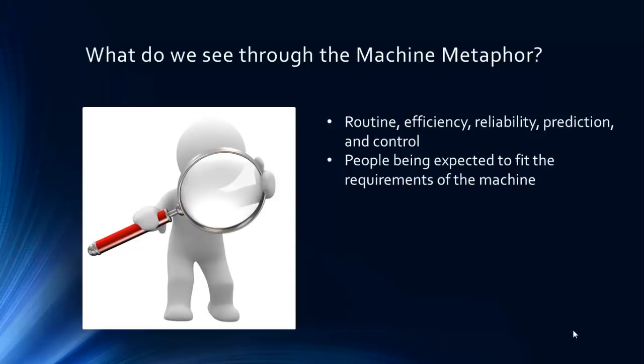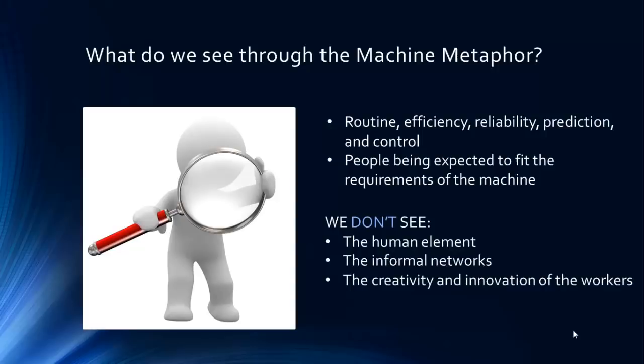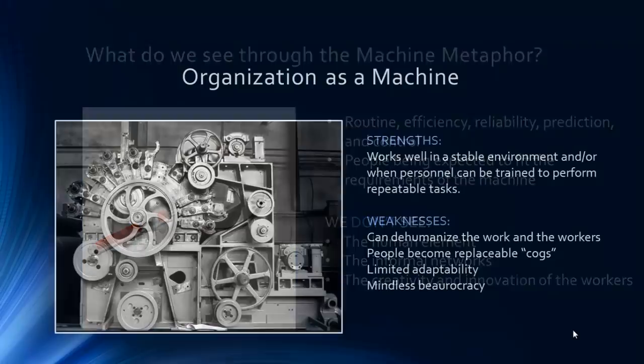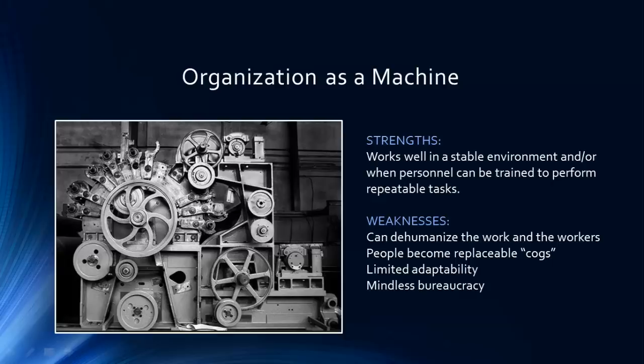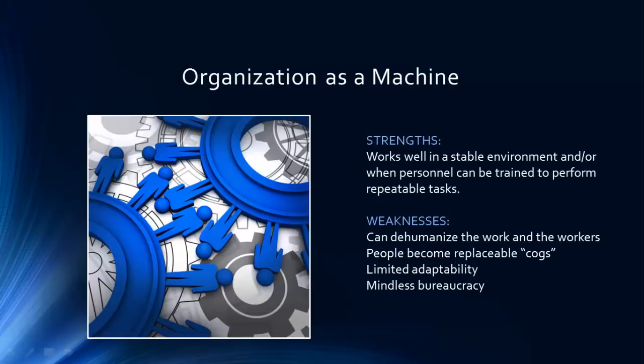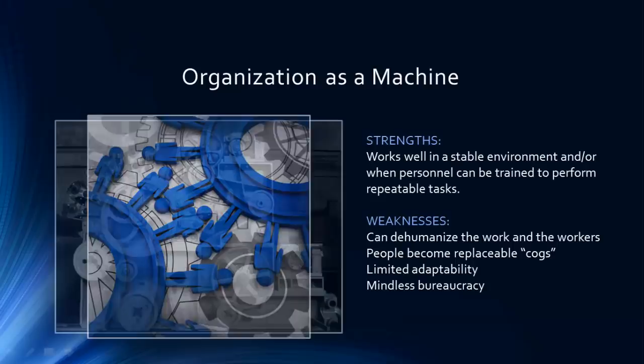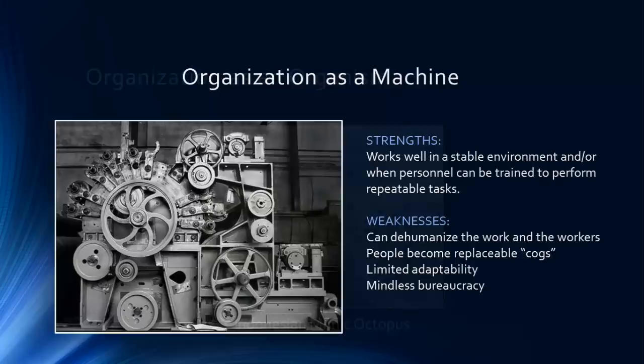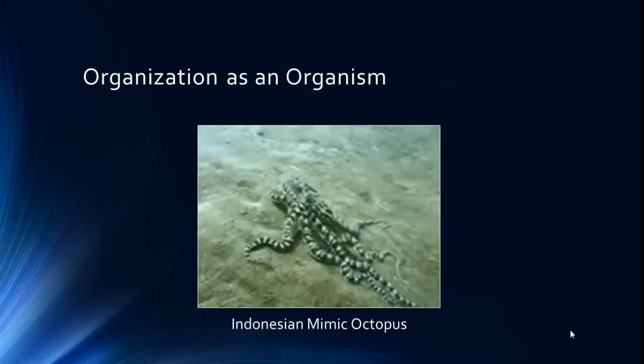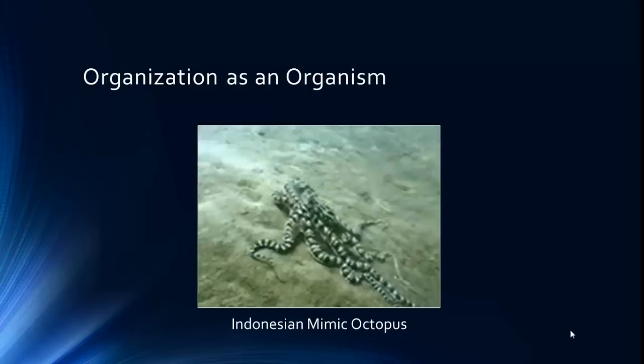When we look at organizations this way, we see human beings being expected to fit the requirements of the machine. What we don't see is the human element, the informal networks, the creativity and innovation of the workers. A strength of this metaphor is that it works well where a machine would work well, such as a stable environment where people are trained to perform repeatable tasks. A weakness is that this metaphor can dehumanize the work and the workers — people become replaceable cogs. The machine metaphor implies limited adaptability and mindless bureaucracy.